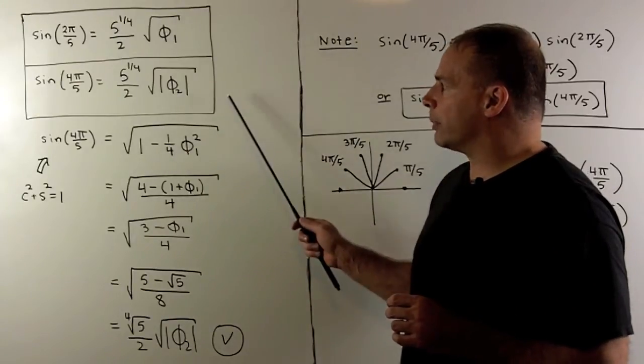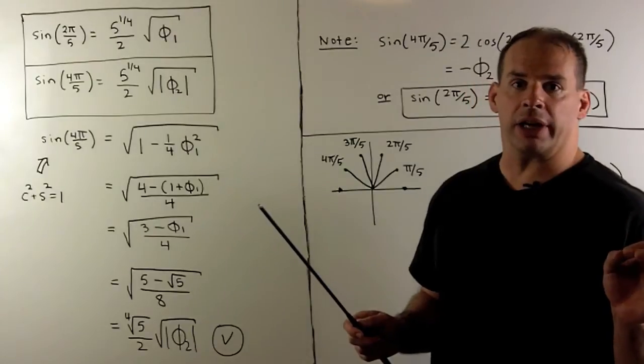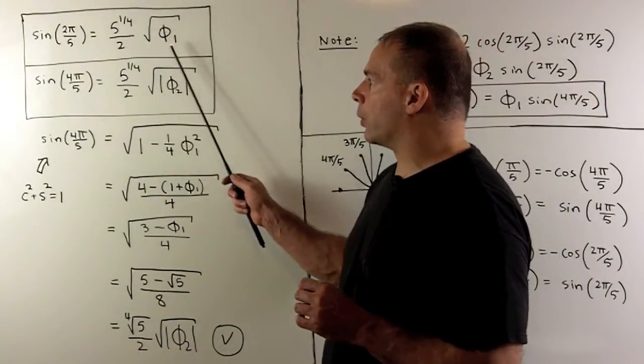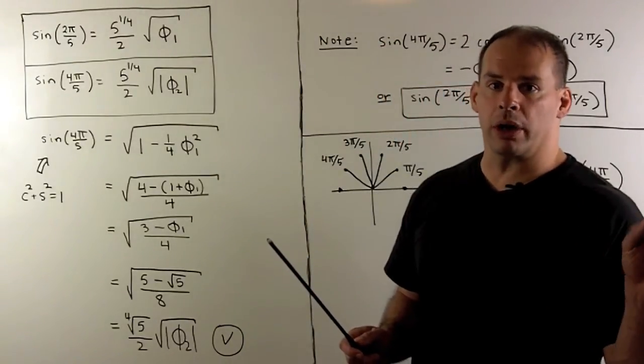Now, we have the following formulas for sine. These should be checked with the calculator. Note, I'm taking the square root of an expression with a square root in it. That's fine. At least we're taking the square root of important numbers.